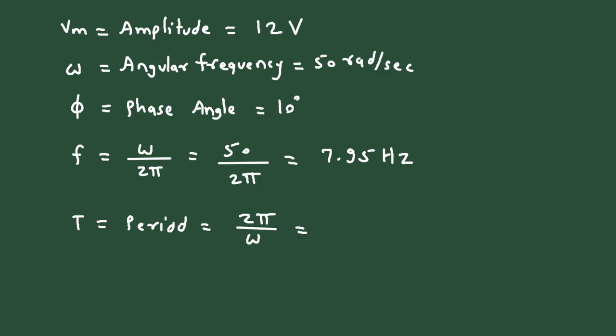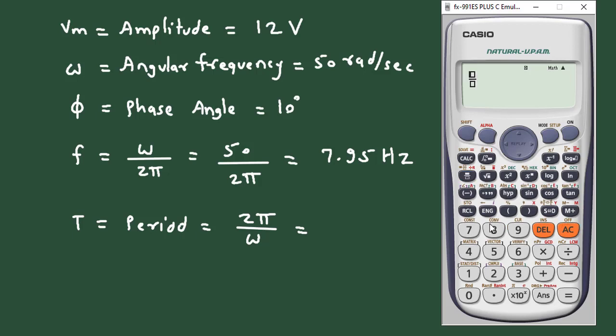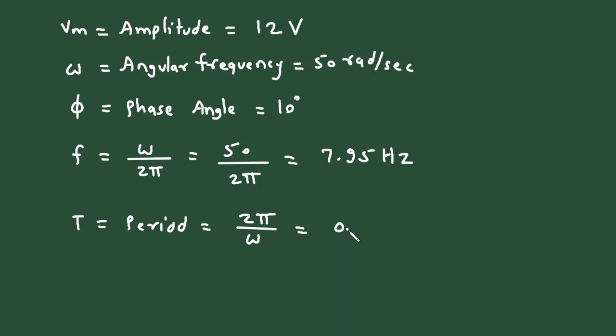So 2π divided by 50 equals 0.125 seconds.